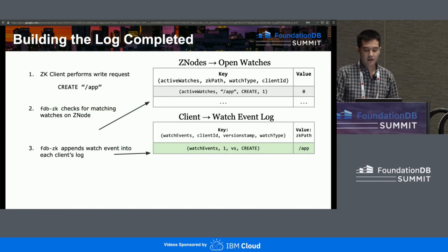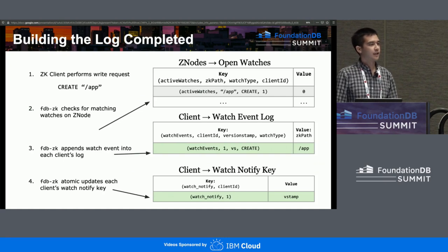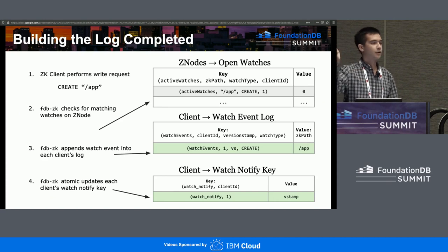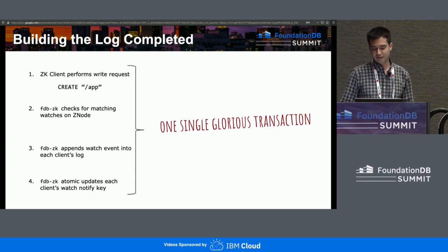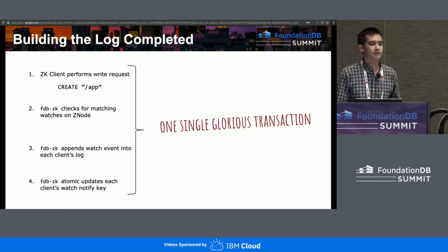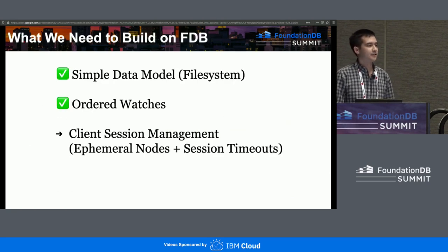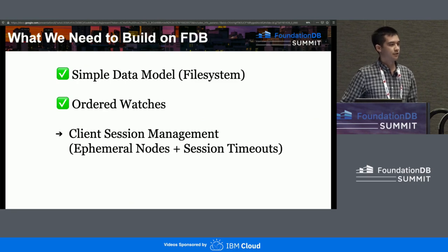Going back to how we're building up the watch event log, we also need to trigger a notification for the watcher — so we perform an atomic update to the notification key as well. All of this happens in a single transaction. I can't say enough good things about FoundationDB transactions — the semantics are so strong. There are so many races that are just taken care of, which other databases would have made very challenging. With that, we've now built ordered watches in the exact same way Zookeeper handles them.